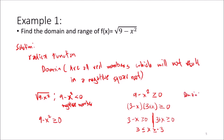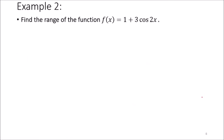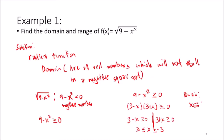Therefore the domain is the set of x that is an element of [-3, 3], meaning x is between negative three and positive three.